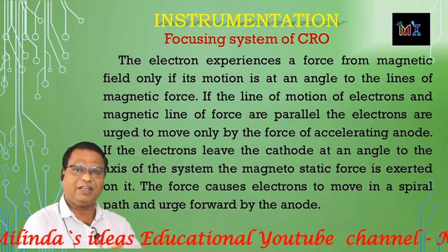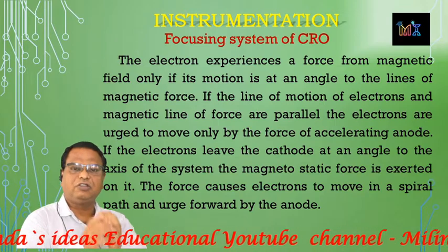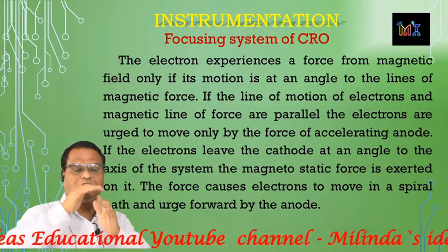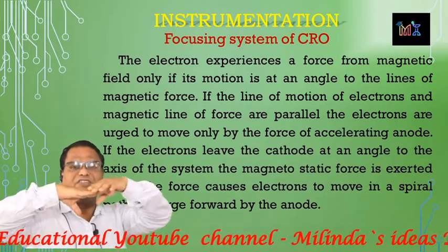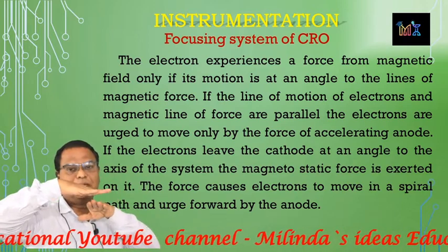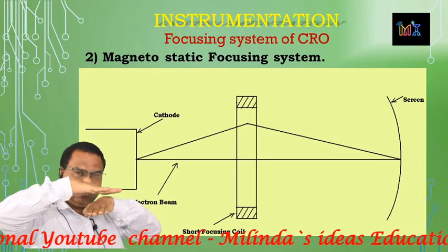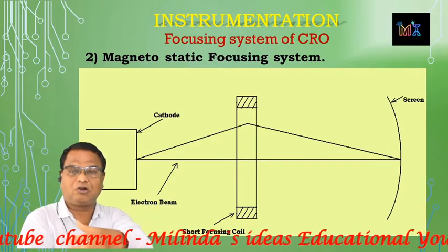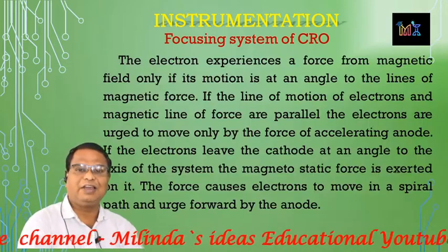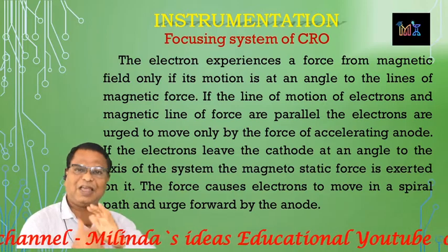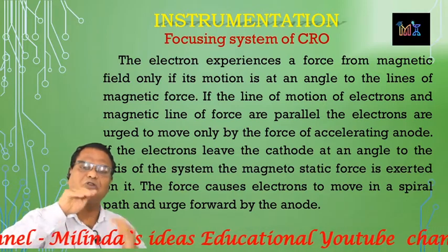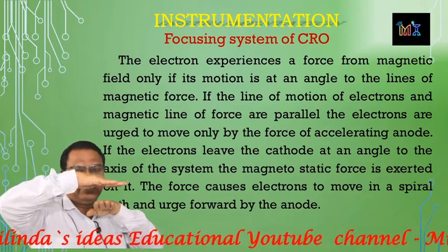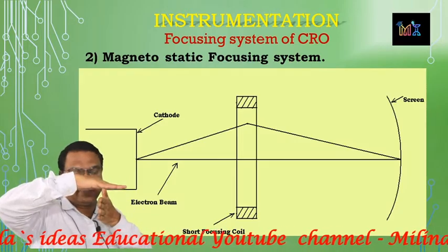The second type are the para-axial electrons. They emit from the cathode with a very small angle relative to the axis. You can imagine the magnetic flux lines — these para-axial electrons move at a small angle to the axis. The force exerted by the magnetic field acts on these electrons, causing them to move towards the screen in a focused manner.